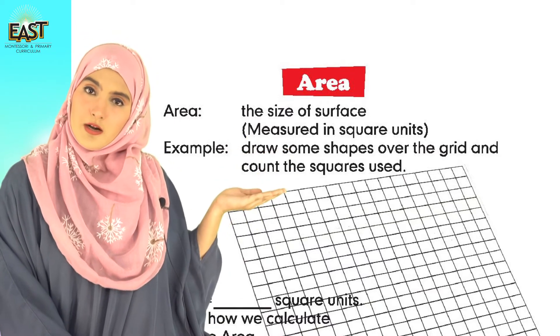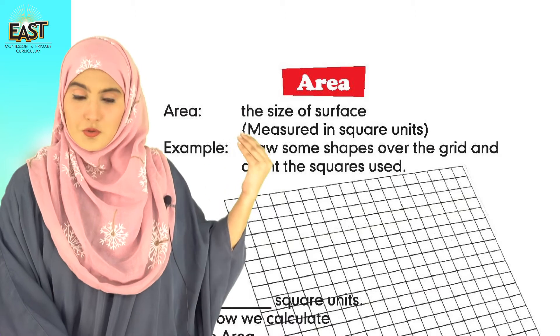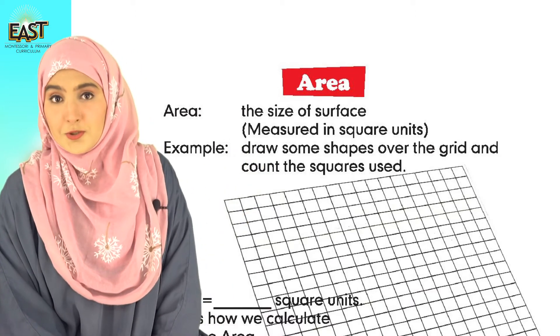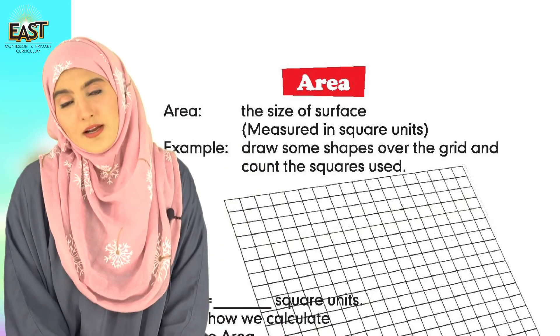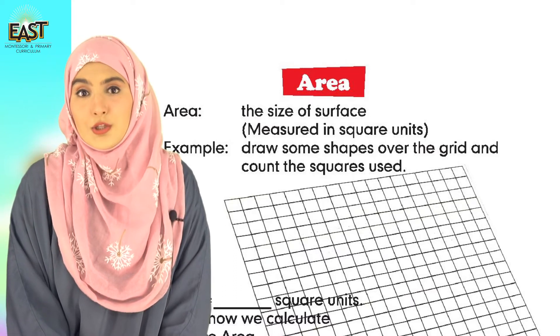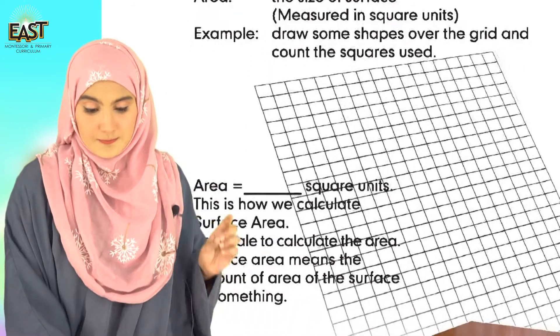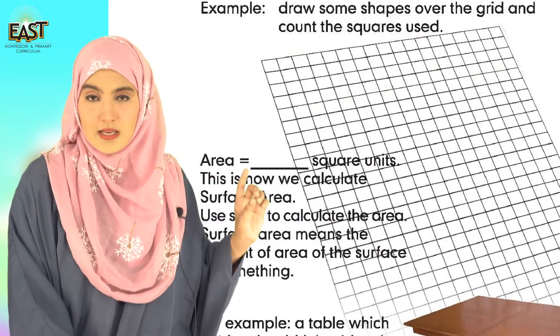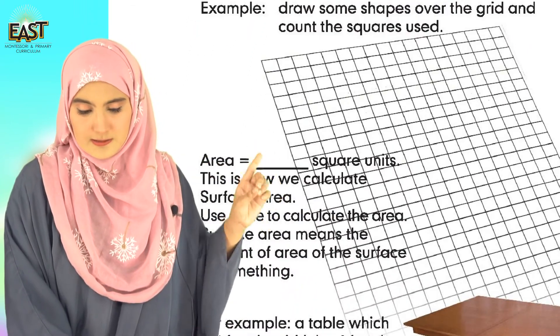Then you will count how many squares are being used - jo cover kar rahi honge particular shape ko - and then you will write the area in square units. Area is equals to dash square units. This is how we calculate surface area.